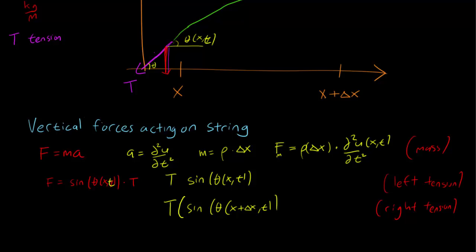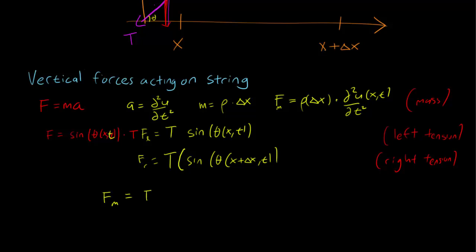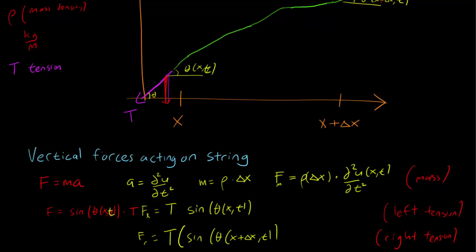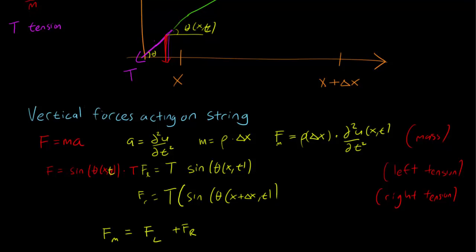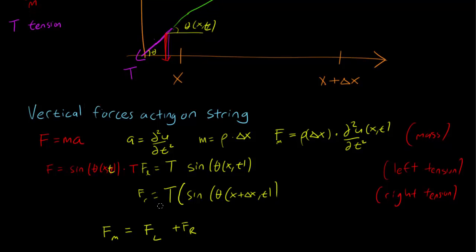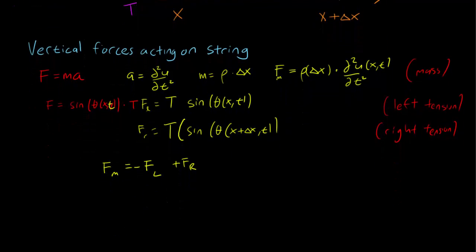We have the force from mass, force left, force right. According to physics, these three forces need to balance out. So we need F from mass equal to F left plus F right. According to our picture, the right half is pulling up and the left is pulling down. So we should write this as minus F left plus F right. And we have rho times delta x times the second derivative of u with respect to t equals minus T sin(theta(x,t)) plus T sin(theta(x+delta x,t)).